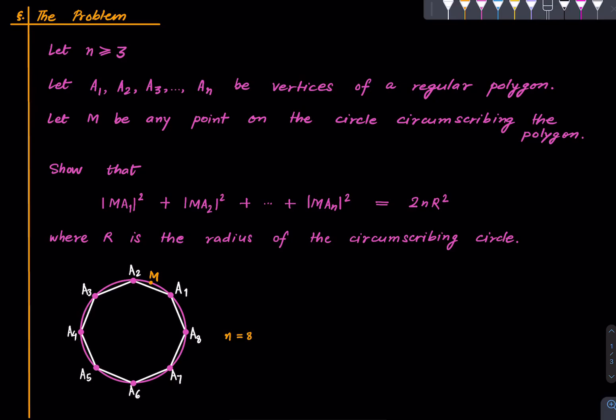Then we want to show this: just take the distance of M with A₁ and square it, take the distance of M with A₂ and square it, distance of M with A₃ square it and so on, and add all of those things. Then the result we want to show is equal to 2nR².